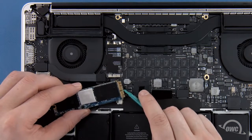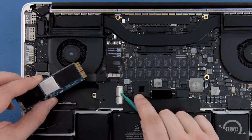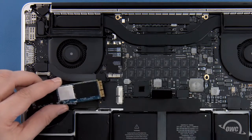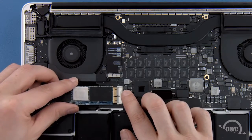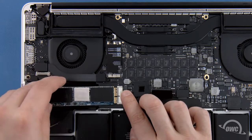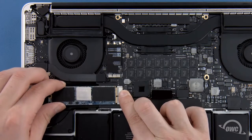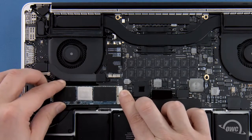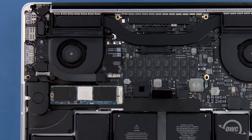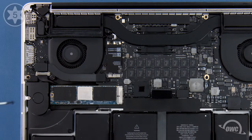The notch on the Aura corresponds with the pin in the socket. Simply line the two up and slide the Aura into the socket until it's fully seated. Then, make sure the Aura is laid flat and secure it in place with the Torx T5 screw.